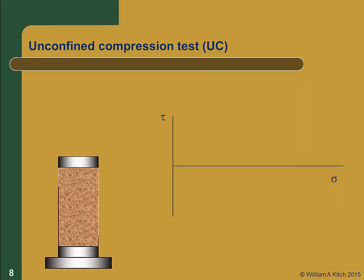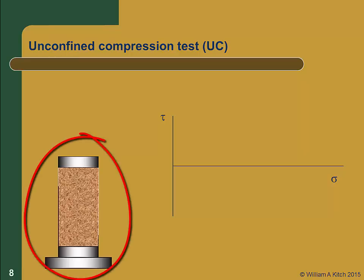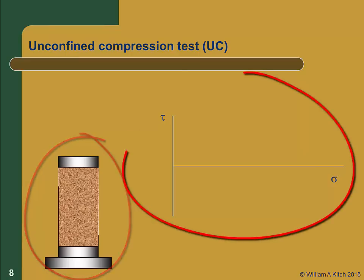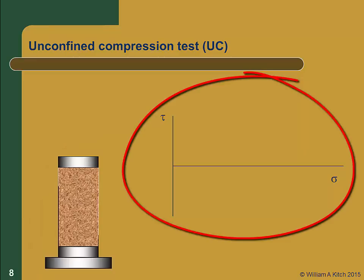In the next part of this webcast, we will examine the stress paths followed in each of the four tests we just discussed. In each case, we'll present a schematic of the specimen showing the boundary conditions and applied stress. On the right, we'll draw the Mohr circles for the test, plot the failure envelope, and determine the strength parameters phi and c.